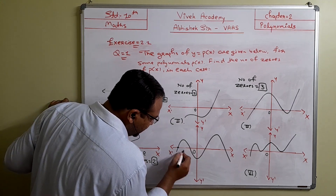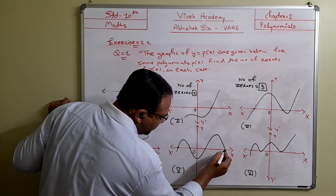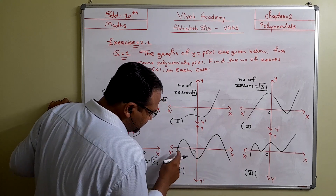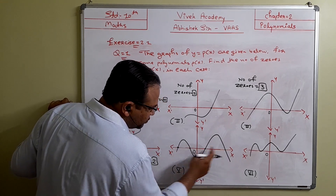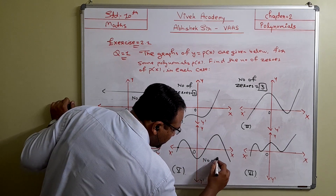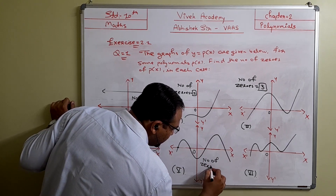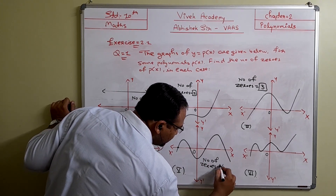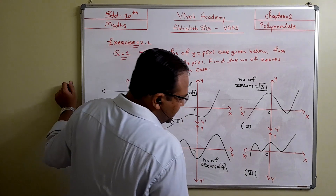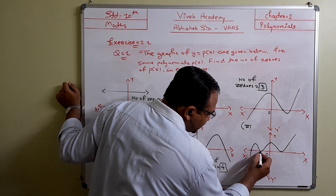In question 5, the graph is intersecting the x-axis at one, two, three, and four points, so the number of zeros is 4.